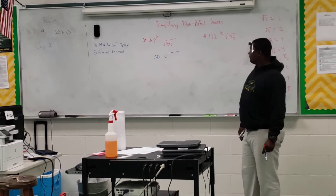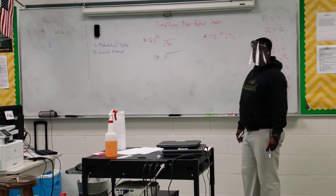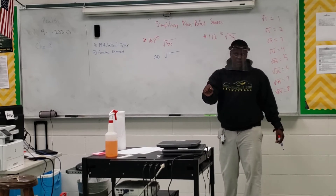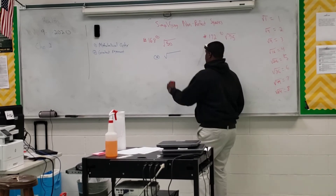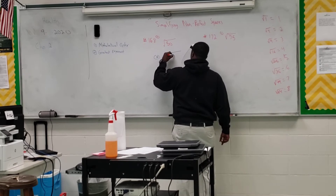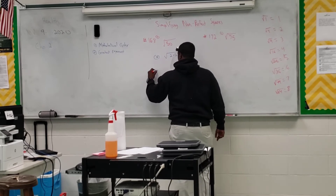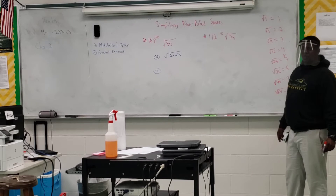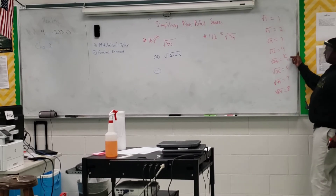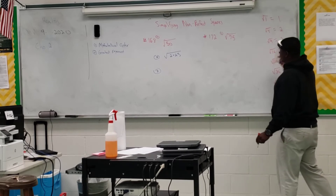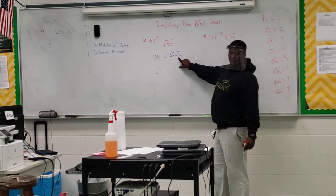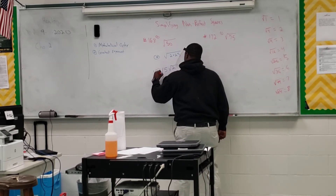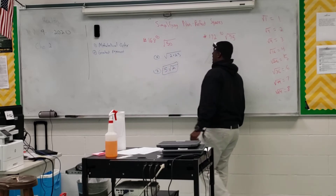What are some factors? Someone says 10 and 5, someone says 2 and 25. I like 2 and 25 because 10 is not a perfect square, but 25 is. So let's do 2 times 25. Out of these two numbers, is either one a perfect square? Yes — 25. So we can factor out the 25. What is the square root of 25? Five. So I can bring 5 outside the radical and leave 2 inside. That is simplifying a non-perfect square.